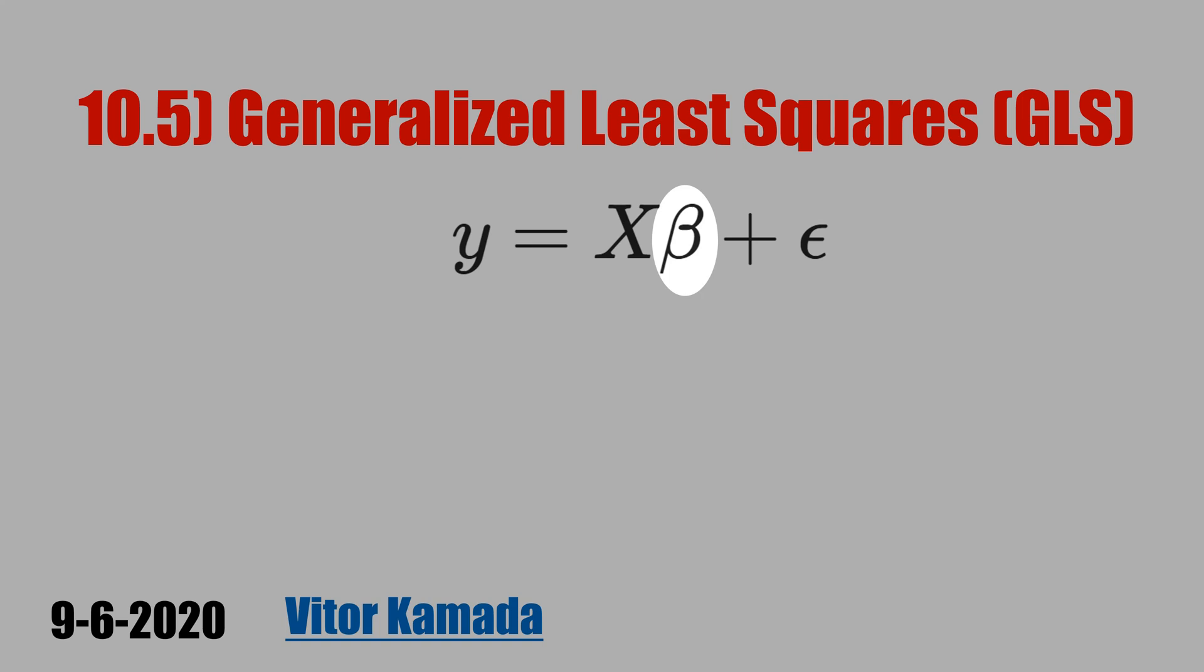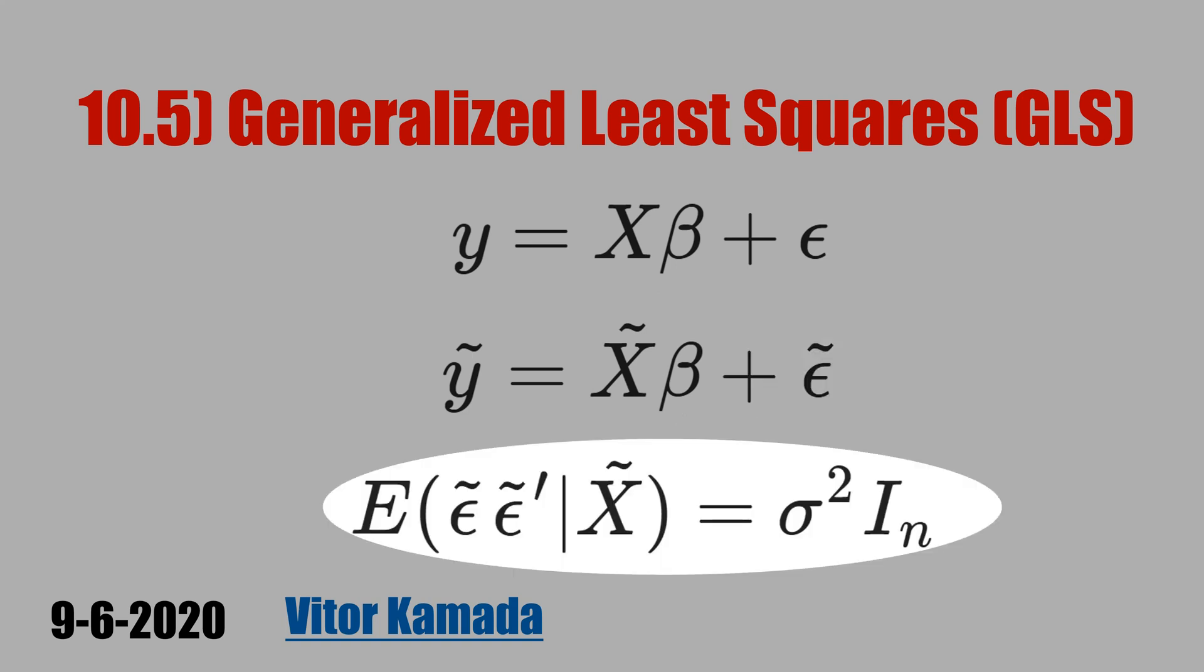In the GLS, we transform this regression. You get this y tilde equal x tilde times beta plus error term tilde. And the goal of this transformation is to get homoscedasticity. That means you want to make the variance of the errors constant.